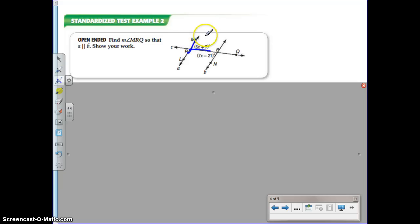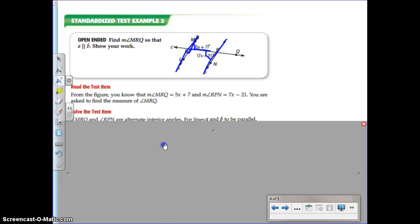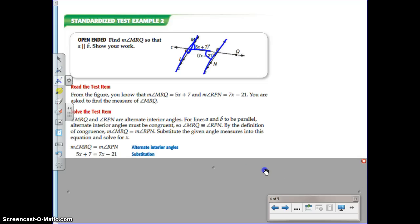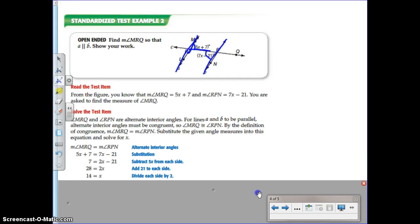Here's A, here's B. For them to be parallel, we know that M R Q would have to equal R P N because they're alternate interior angles, and that's what we know by the converse of the alternate interior angles theorem. So we could set them equal to each other, which means we can say 5x plus 7 equals 7x minus 21, and you know how to solve this, so I'm not even going to take time to do it.